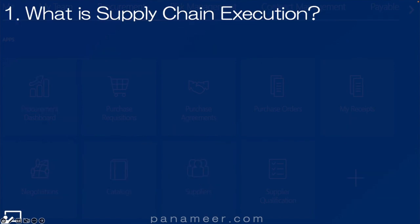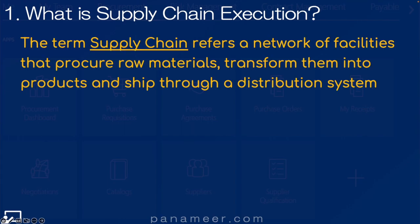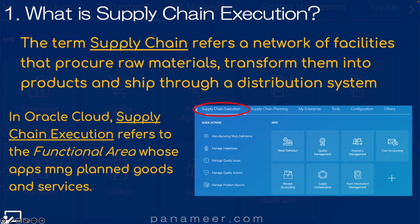Slide one: What is Supply Chain Execution? The term Supply Chain refers to a network of facilities that procure raw materials, transform them into products, and ship through a distribution system or network. In Oracle Cloud, Supply Chain Execution refers to the functional areas whose applications manage planned or inventoried goods and services.